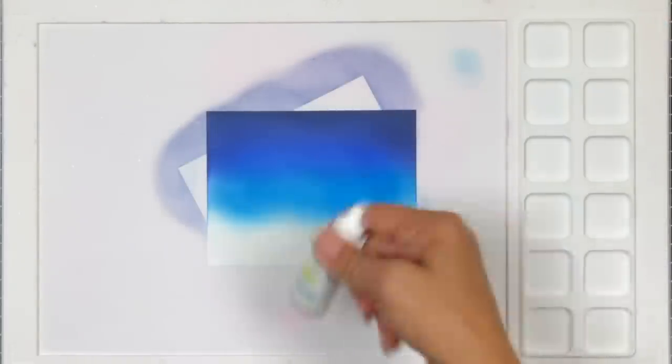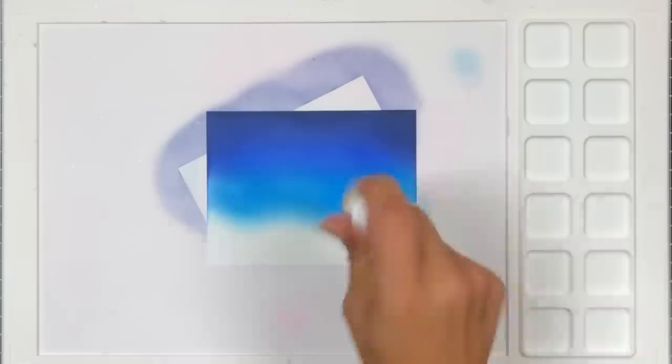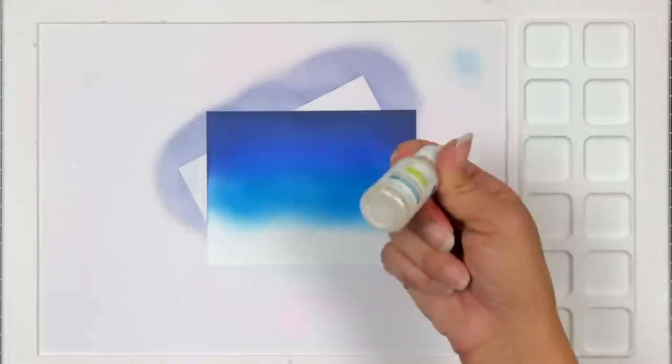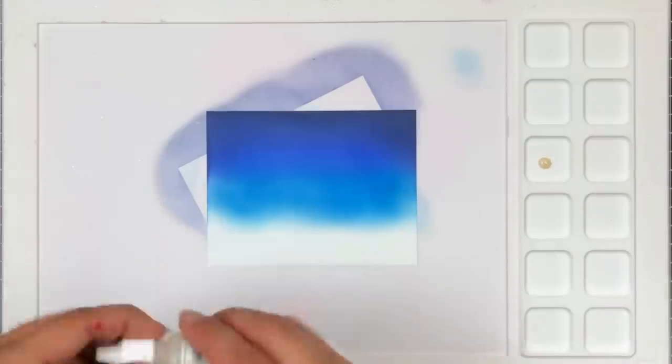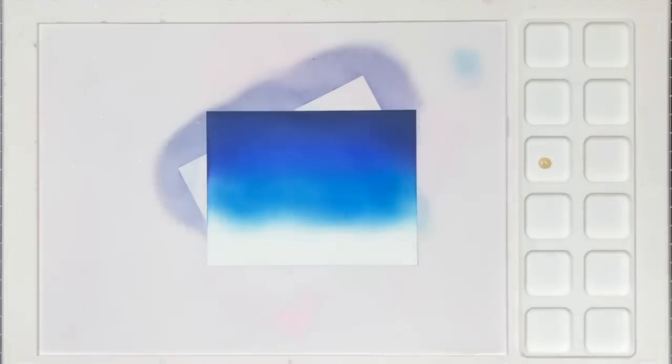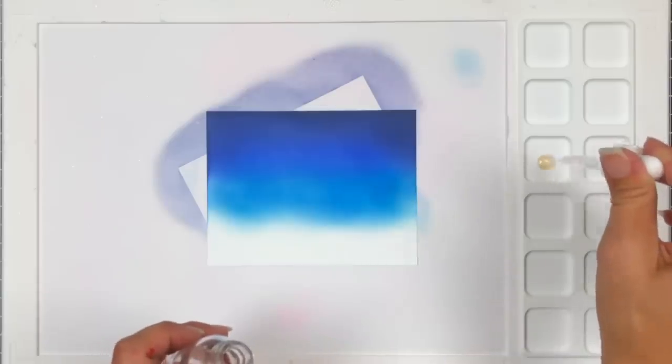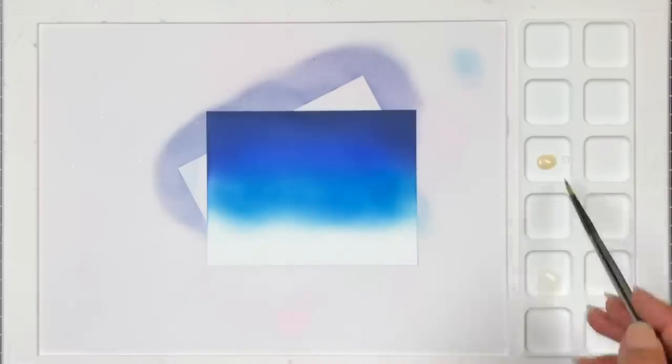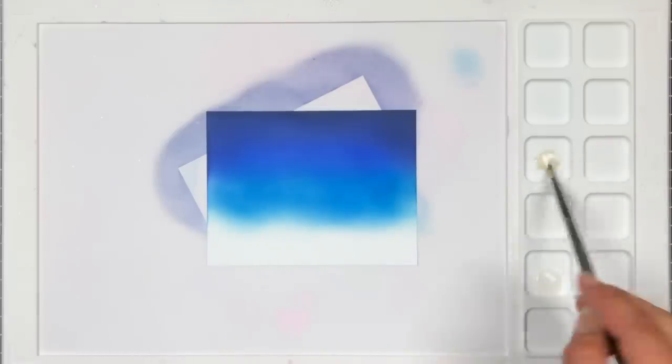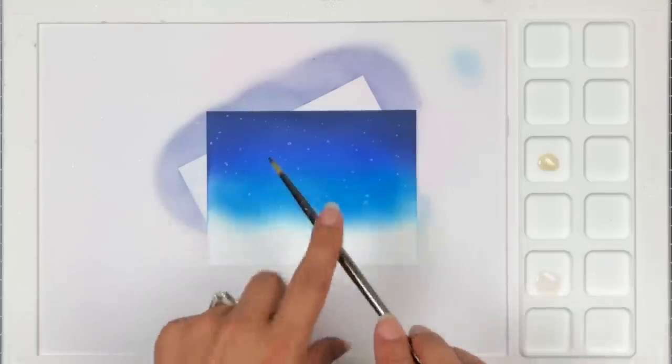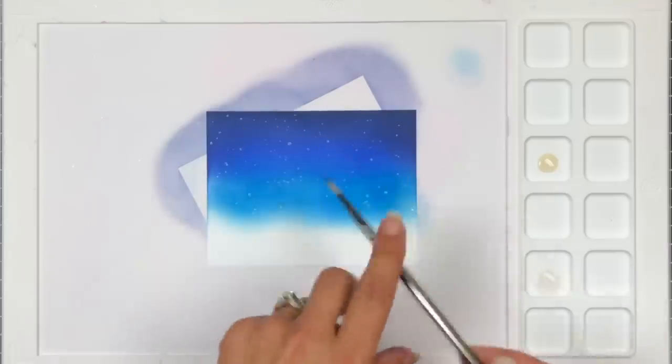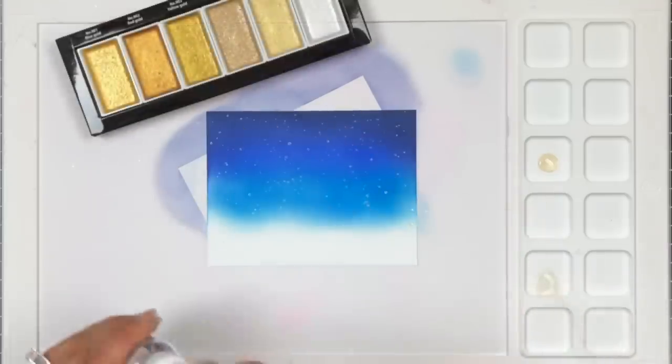Once I'm happy with my blend I'm going to add some stars to my background and I'm going to be using the Lawn Fawn Liquid Stardust. You want to make sure you shake this up really well because that does settle at the bottom of the bottle. So once I have that nice and shook up I'm going to just squeeze some off into the side there in that little tray. I'm going to add a couple drops of water. I do want this pretty liquefied because I want it to spread out really well.